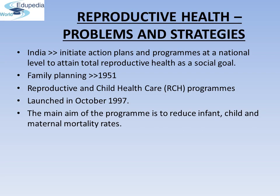The Reproductive and Child Health (RCH) program was launched in October 1997. The main aim of the program is to reduce infant, child and maternal mortality rates. Creating awareness among people about various reproduction-related aspects and providing facilities and support for building a reproductively healthy society are the major tasks under these programs.